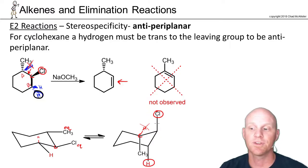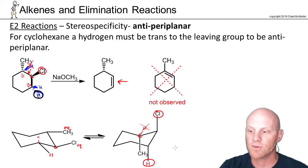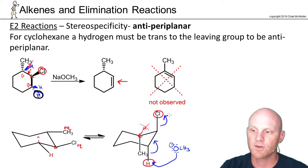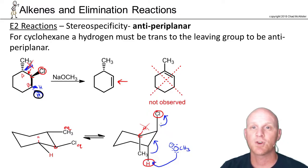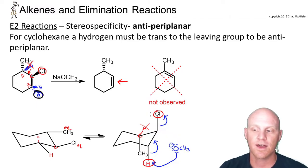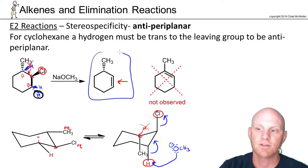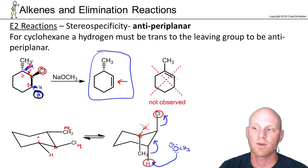For the mechanism: the strong base comes in and deprotonates the axial hydrogen, frees up electrons to form the pi bond, and kicks off the leaving group. You must recognize that there are two chair conformations, and it is only the one with the leaving group axial where the reaction can take place. We only get one product here — the Hofmann or anti-Zaitsev product. We don't get the Zaitsev product at all because there's no antiperiplanar hydrogen available for that elimination.